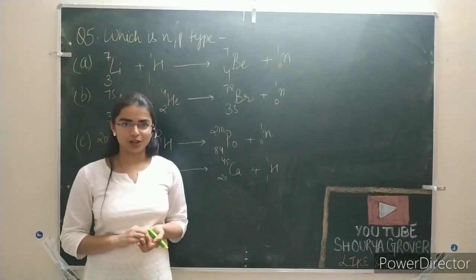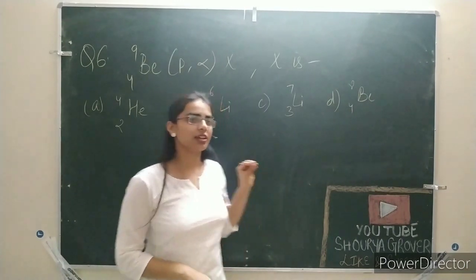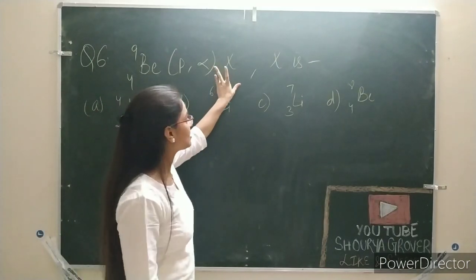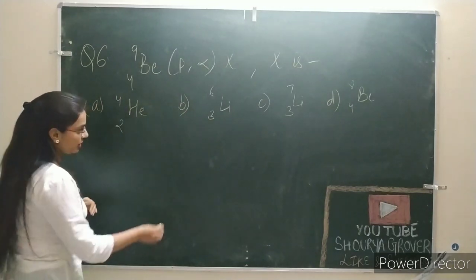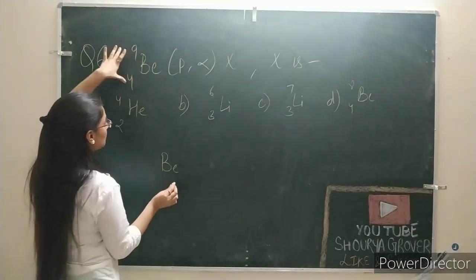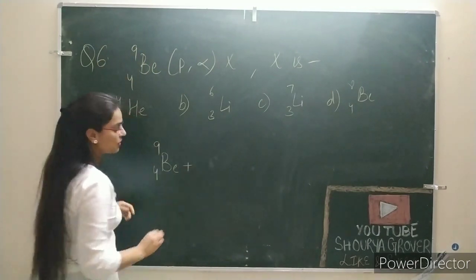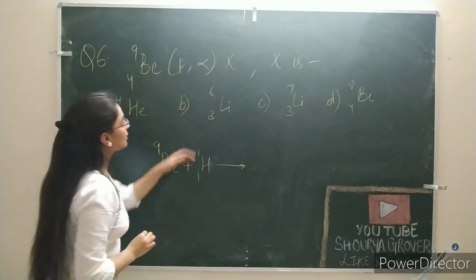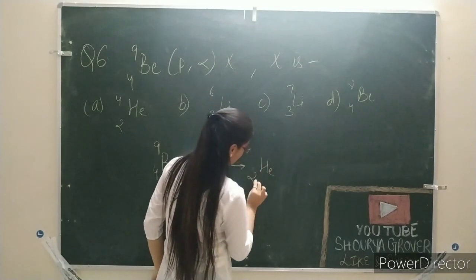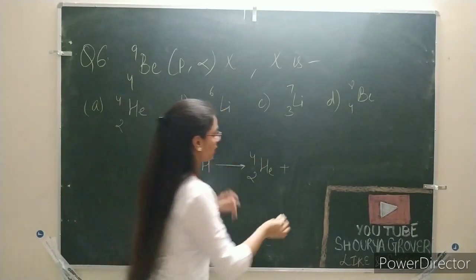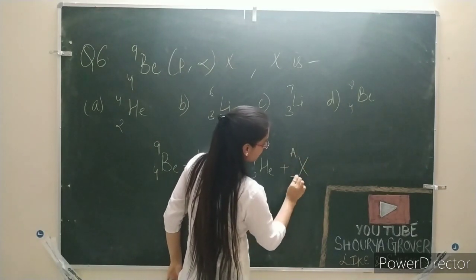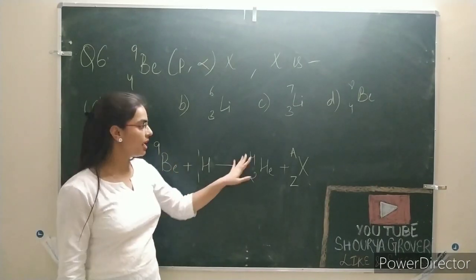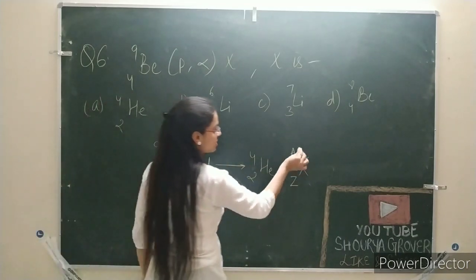Let's go to our last question. You have given a reaction and you have to identify the product X element. First I write the reaction using the bracket notation — this is the target nucleus. What does it bombard? Proton — proton is our hydrogen atom. What is emitted? Alpha — alpha is the helium nucleus. X will happen. Let mass number be A and atomic number be Z. Left-hand side equals right-hand side: 9 plus 1 is 10. 4 plus A equals 10, so A equals 6.